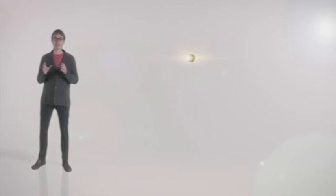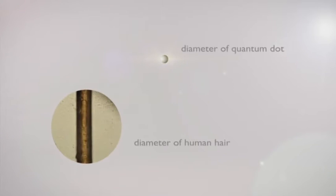A single atom can emit one photon at a time, but atoms are difficult to control, and so instead we build light sources out of solid materials. Such a light source is called a quantum dot. A quantum dot is only a millionth of a millimeter. This is a nanometer.